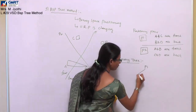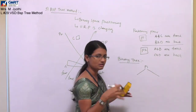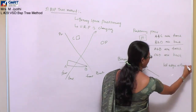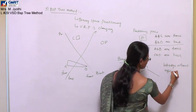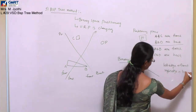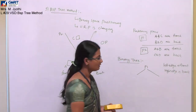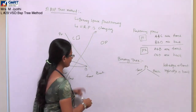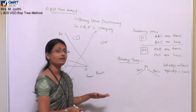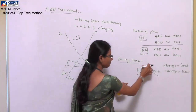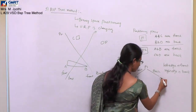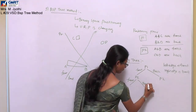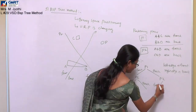We cannot directly fill the leaf nodes for P1 because we also have partitioning plane P2. So we need to consider P2's front and back as sub-nodes. For P2's front, we have two more options — front and back — and for P2's back, we also have front and back.